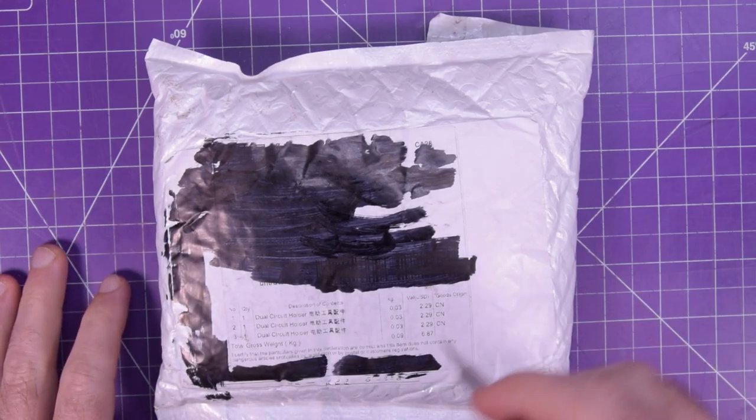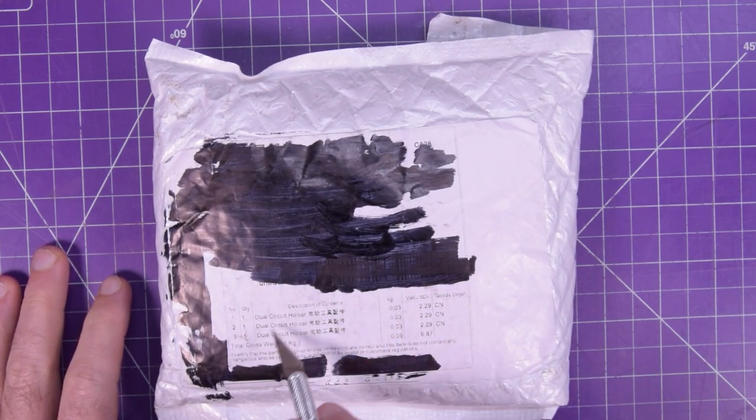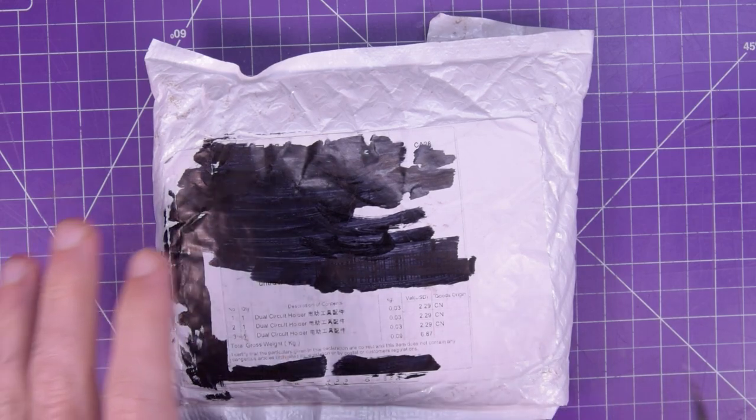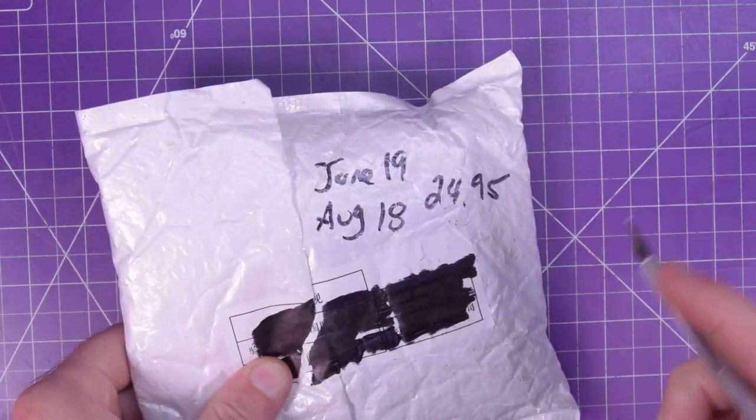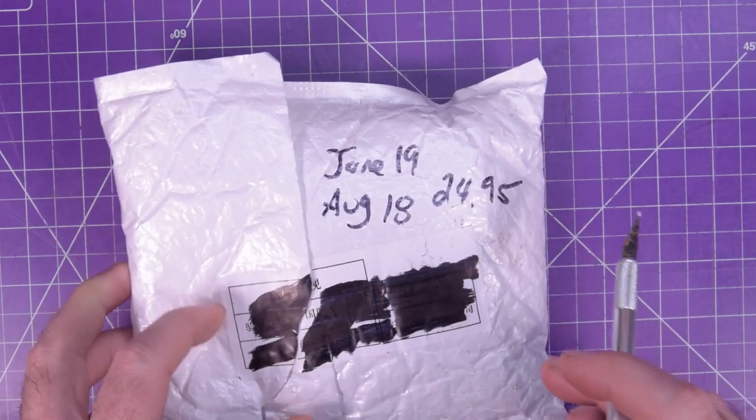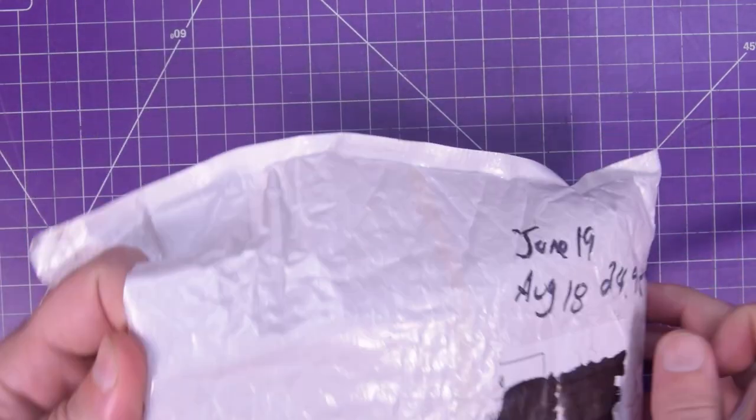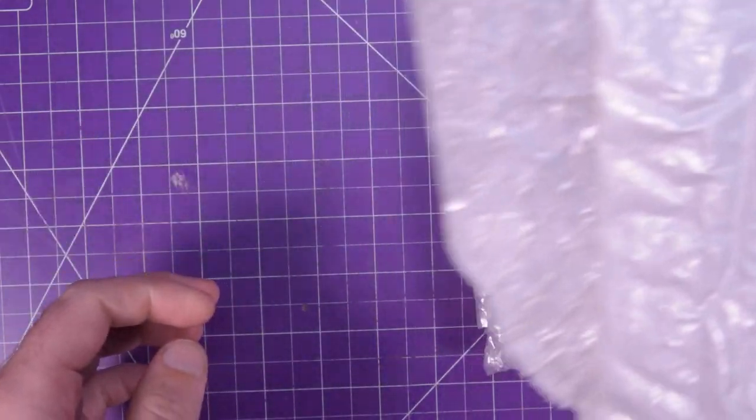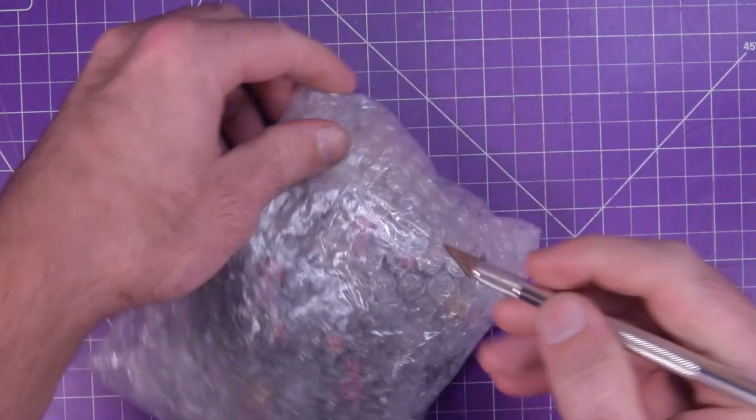First one up is this one here that says dual circuit holder and there's three of them in here. I had to open this before though because it was so long. So June 19th to August 18, 2024. And the numbers on here didn't actually correspond to anything, but the seller did send me something, which was good.